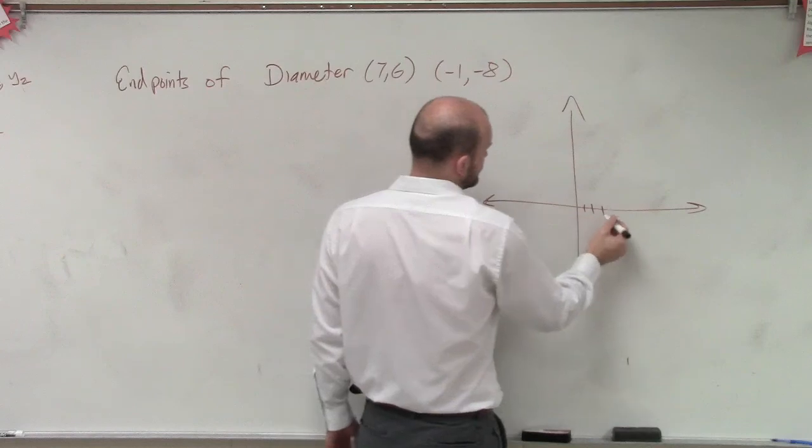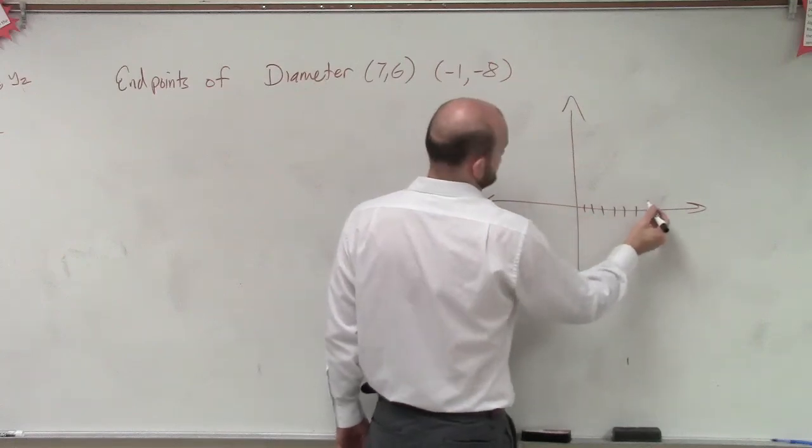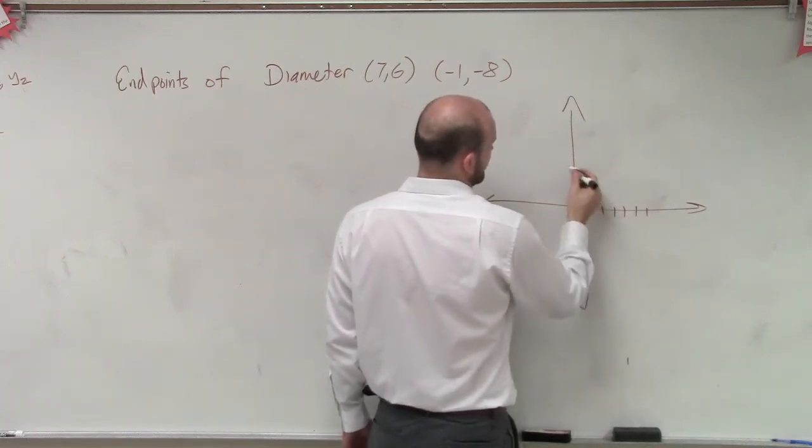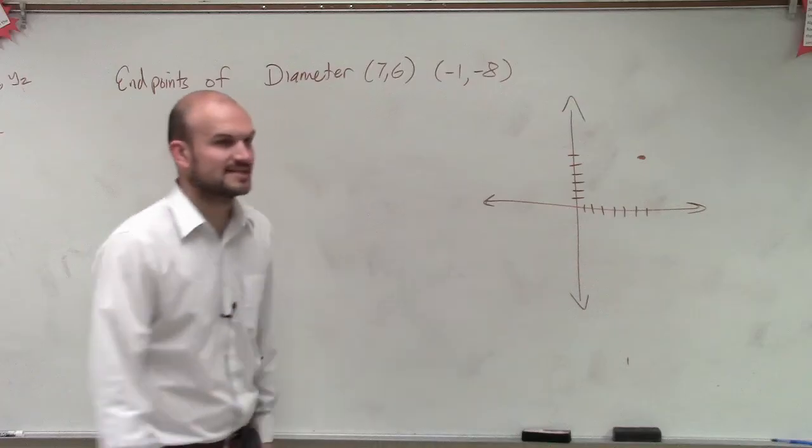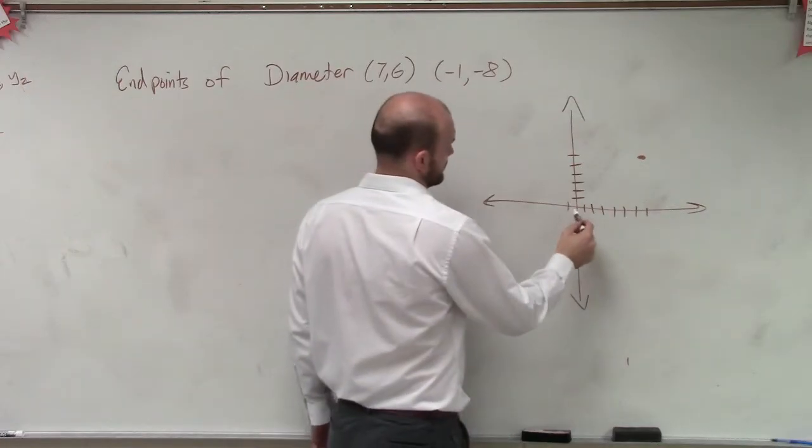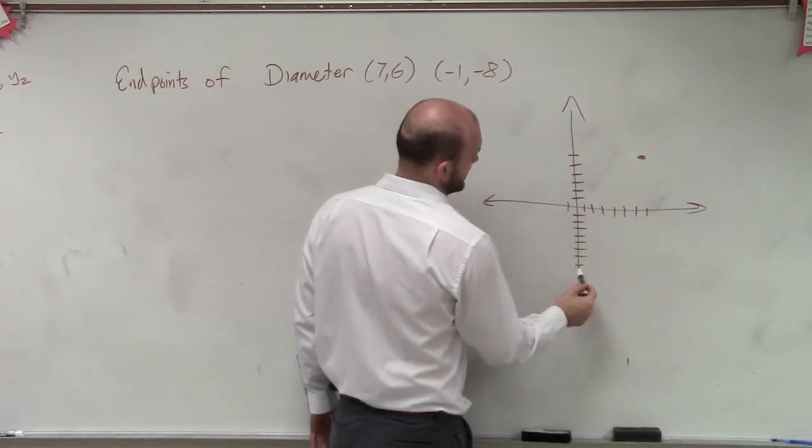7 comma 6, 1, 2, 3, 4, 5, 6, 7... 1, 2, 3, 4, 5, 6. So we have (7,6) and then (-1,-8). 1, 2, 3, 4, 5, 6, 7, 8.